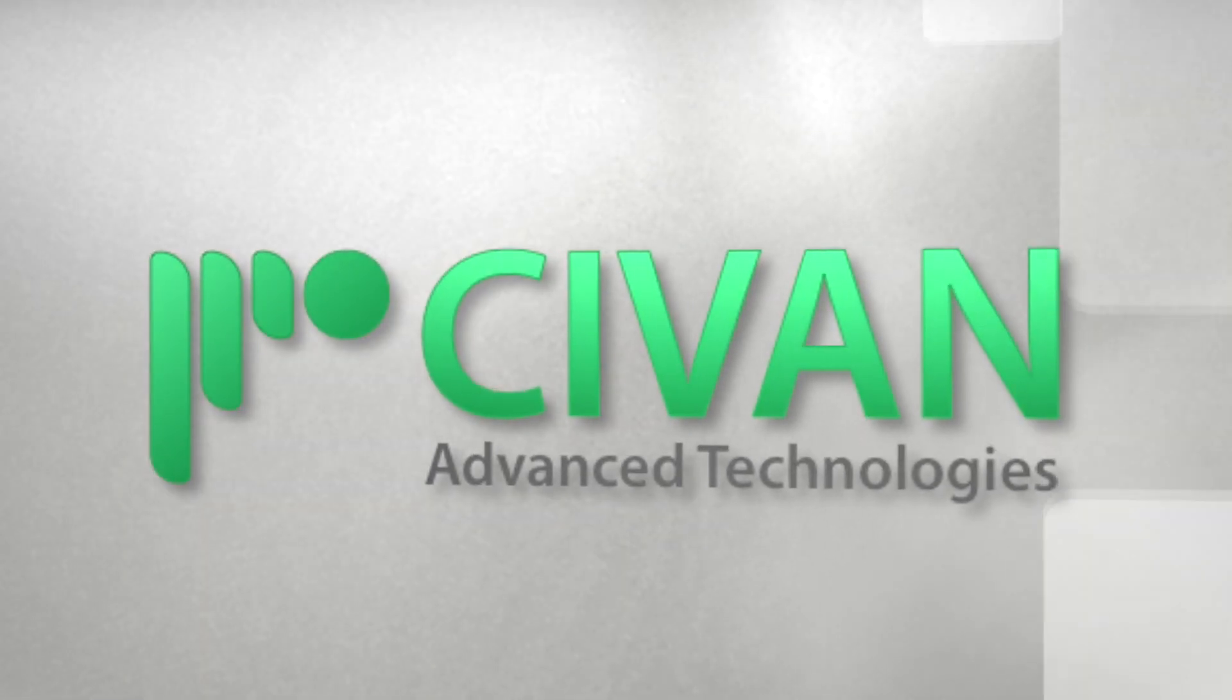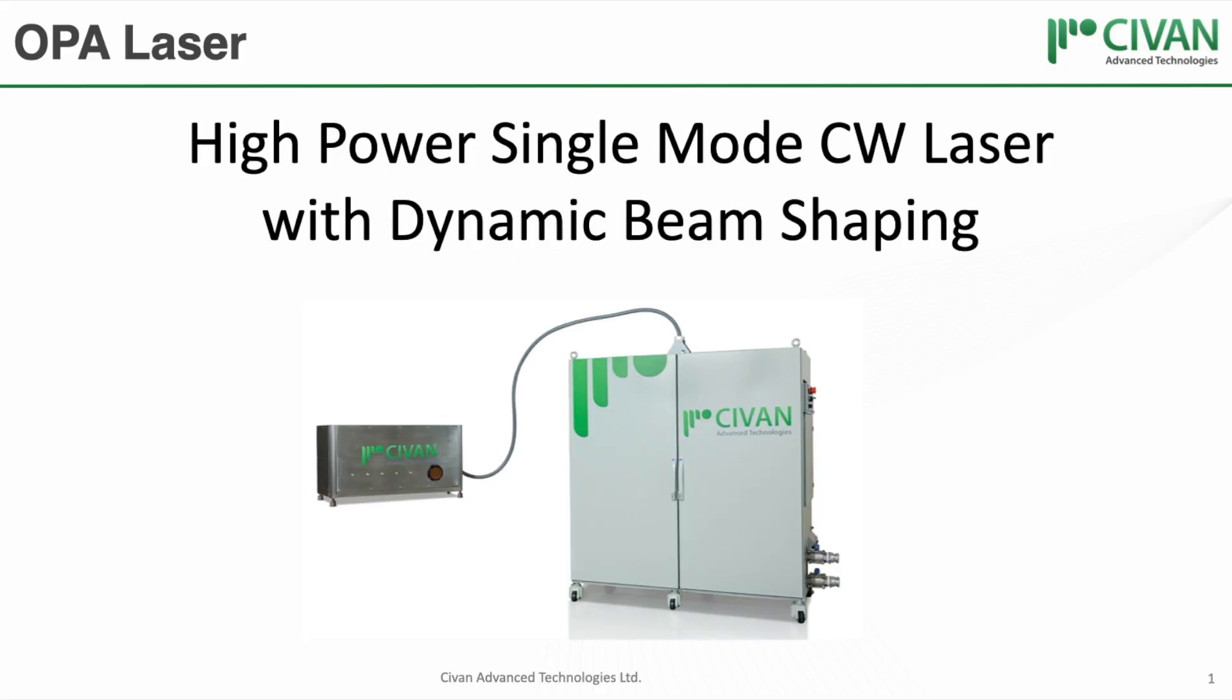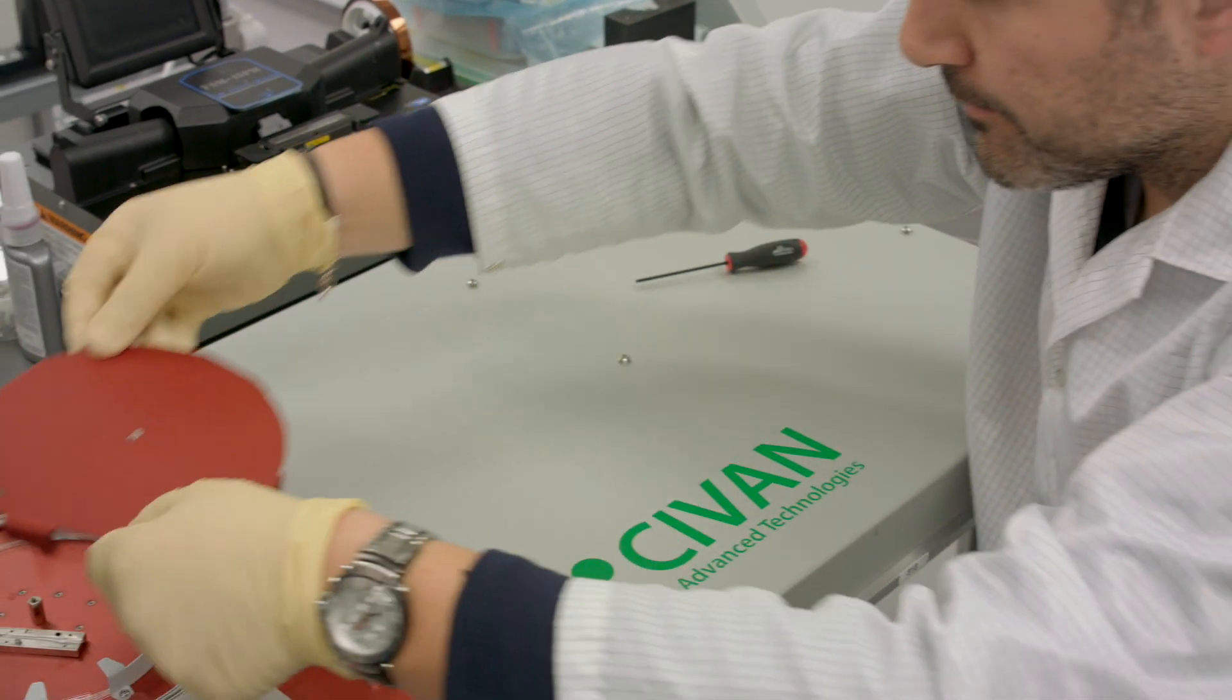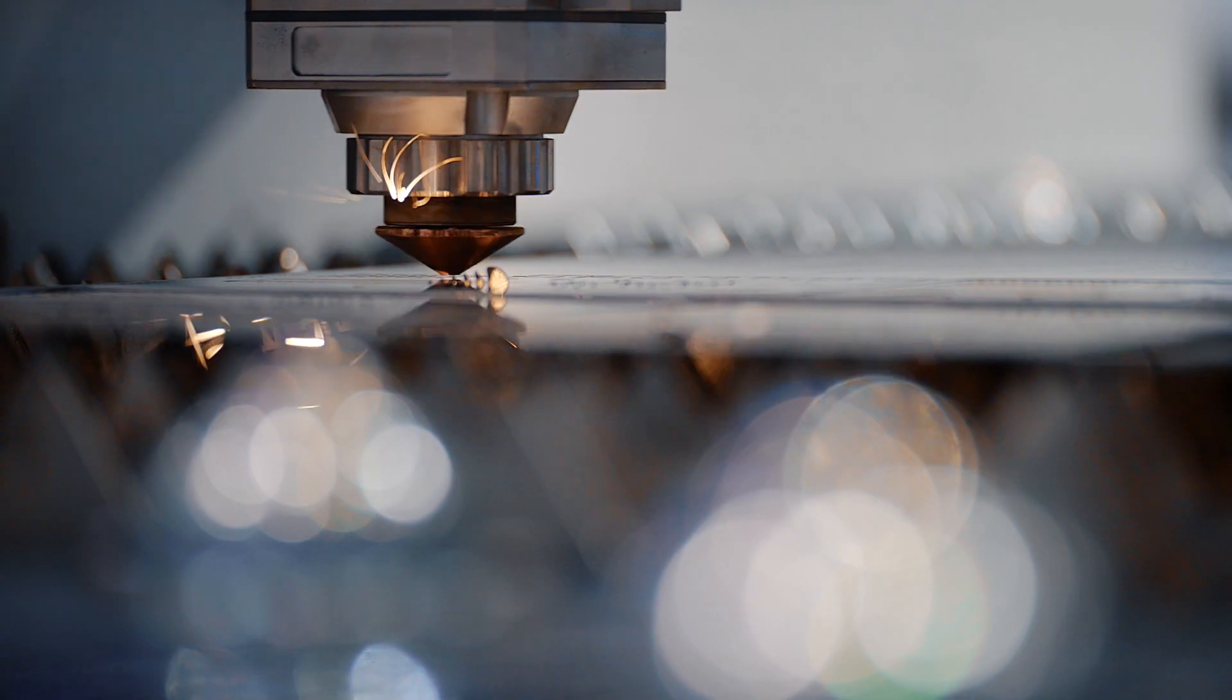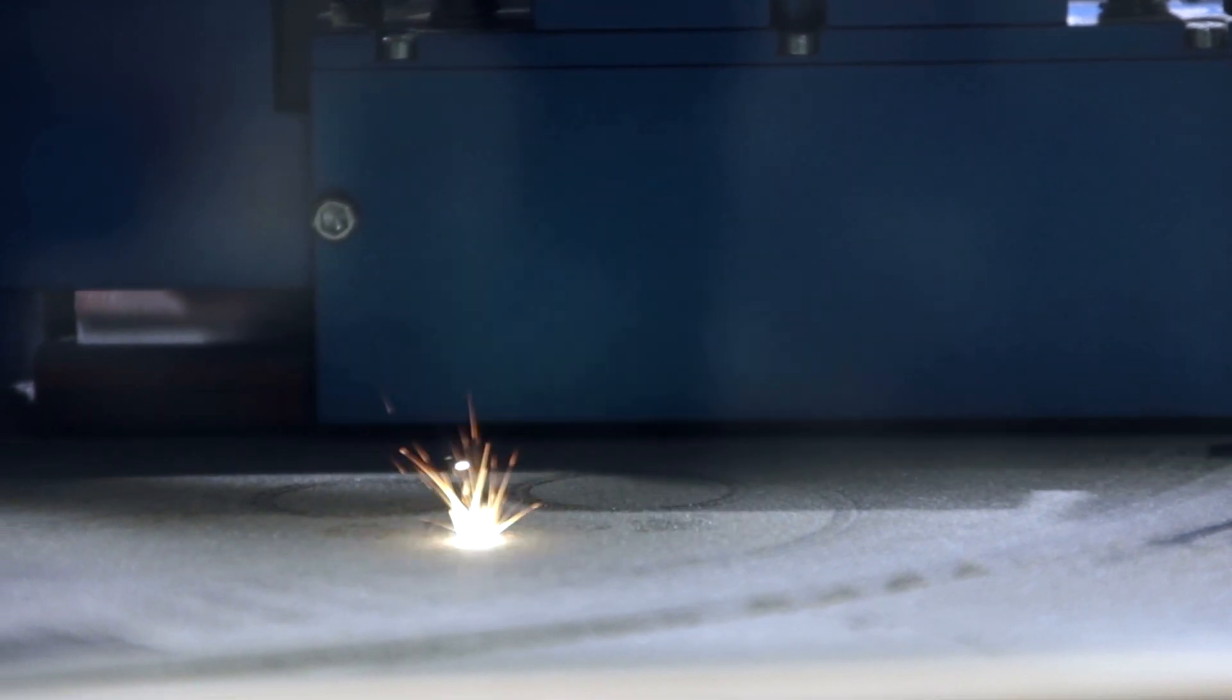Sivan Advanced Technologies develops and manufactures high-power fiber lasers with Dynamic Beam Shaping based on coherent beam combining technology. Dynamic Beam Shaping is used for welding, cutting, drilling, and metal additive manufacturing.